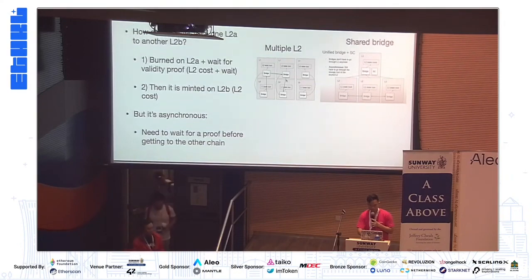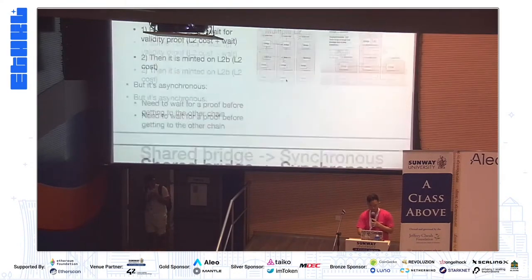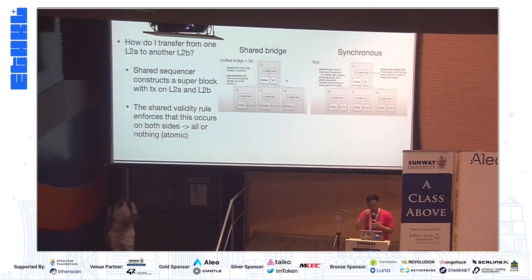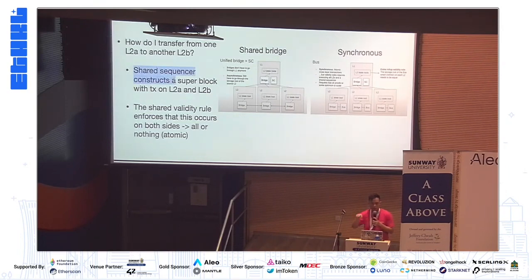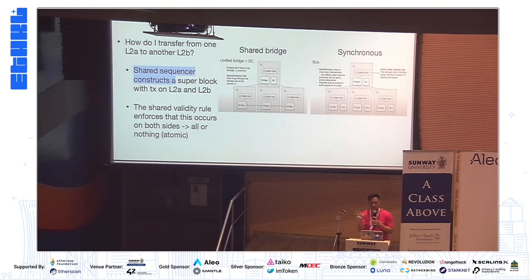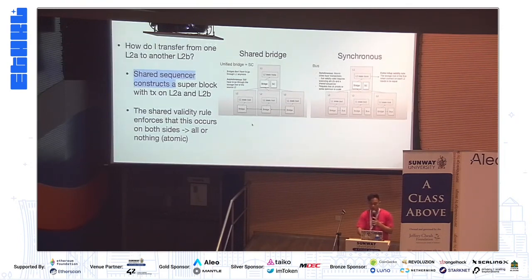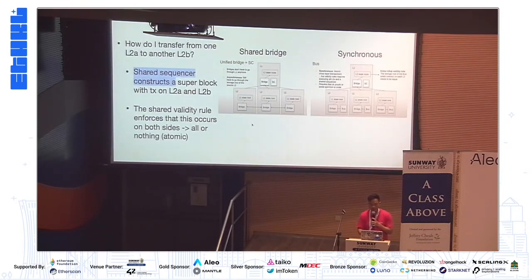To solve the asynchronous issue, we try to make the shared bridge synchronous using a shared sequencer. A shared sequencer will construct a super block on the L1 with a transaction on both L2A and L2B. So the burn function on L2A and the mint function on L2B will be proposed onto an L1 block altogether. This is how we keep the atomic and synchronous nature of this cross-chain interaction.